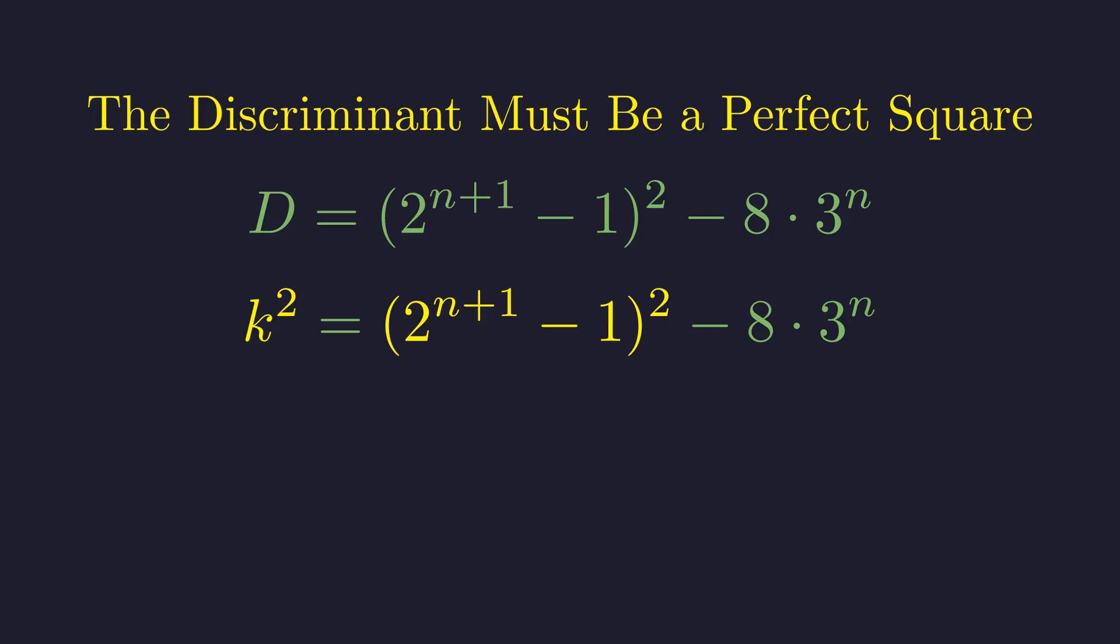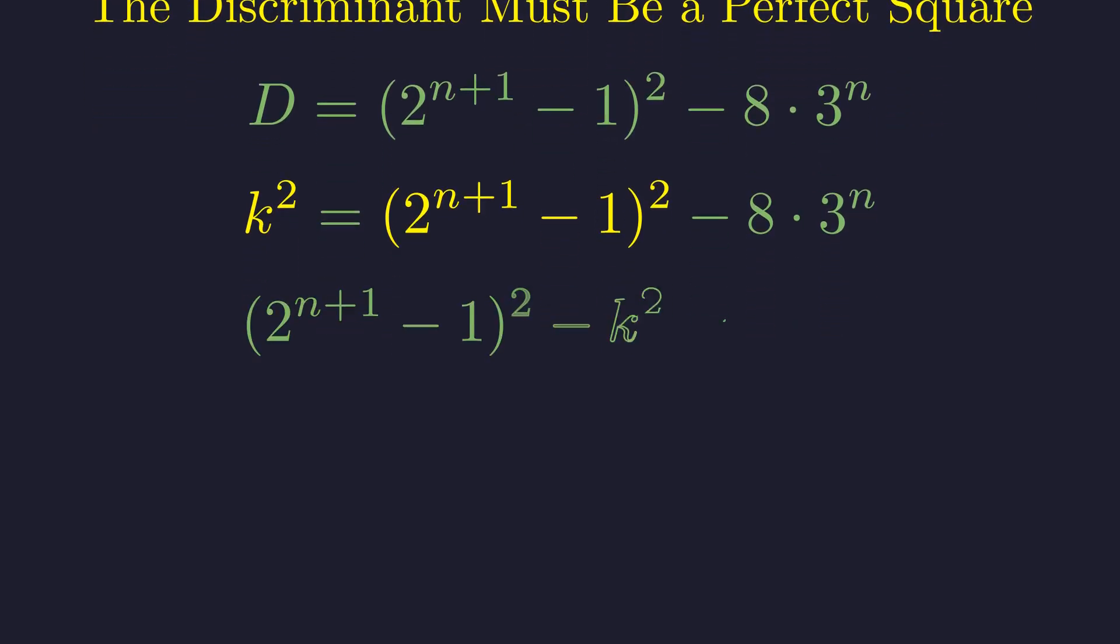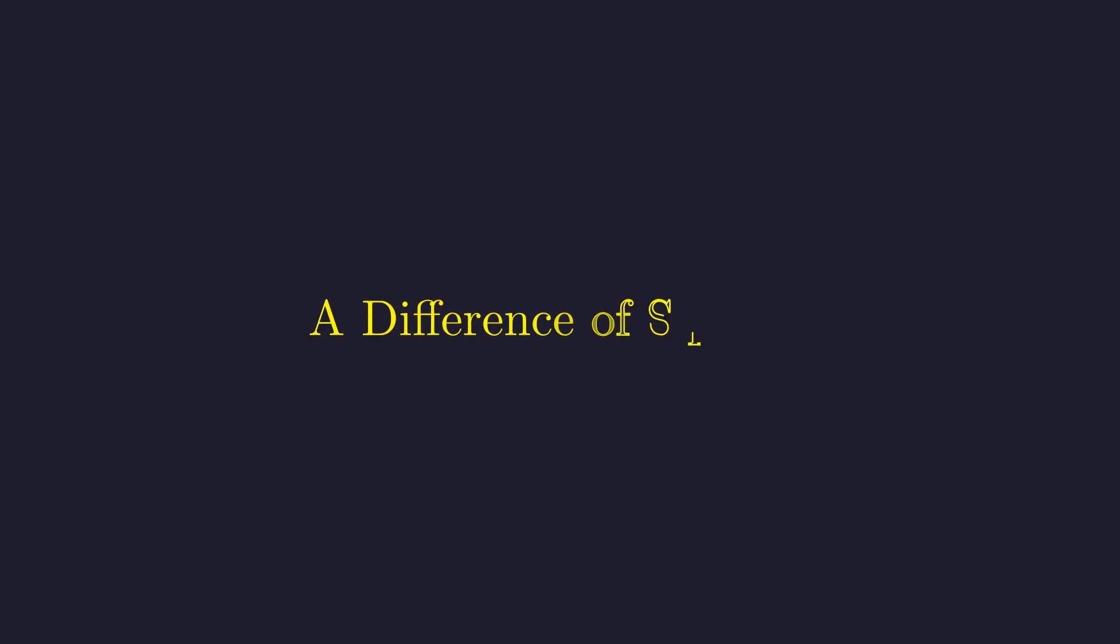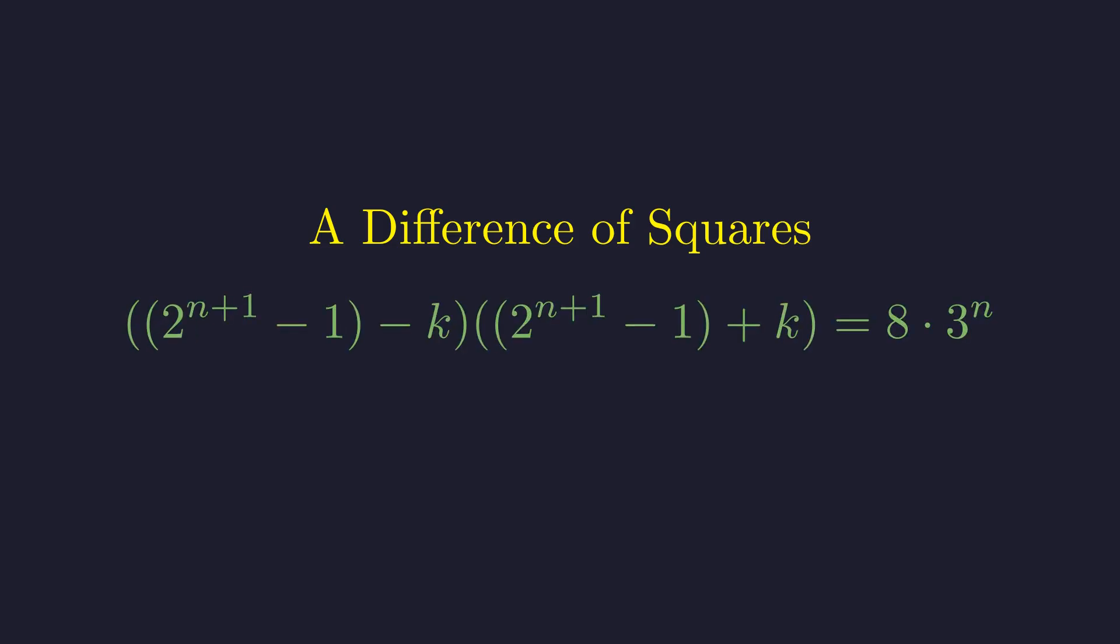Observe the structure of this equation. It contains two squared terms. This suggests rearranging it to form a difference of squares. Rearranging the terms yields a difference of squares on the left-hand side. The utility of this form is that the left side can be factored. Factoring the difference of squares yields a product of two integer factors, which must equal 8 times 3 to the power of n.